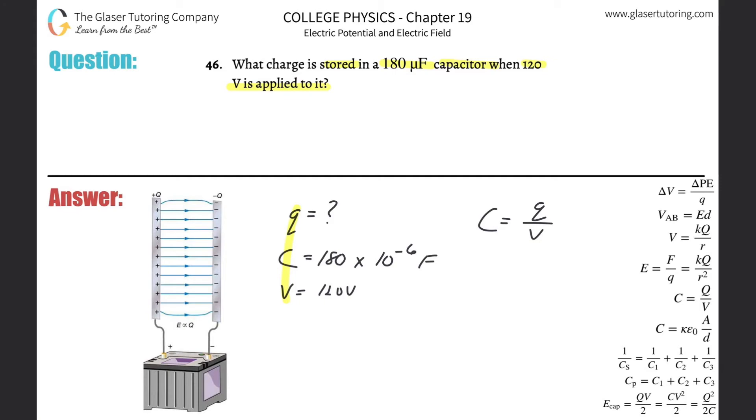So capacitance here is going to be 180 multiplied by 10 to the minus 6th. That's going to be equal to the charge, divided by then the voltage of 120. To solve that for charge, simply cross-multiply. So it's 180 times 10 to the minus 6th, multiplied by 120. And here we get a coulomb value of about 0.0216 coulombs.